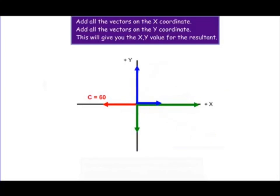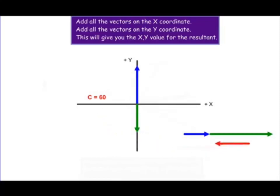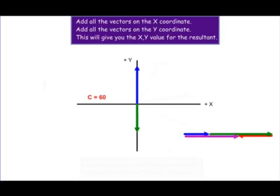We're going to find the sum of all the vectors in the x direction: the x component of vector a and the x component of vector b, placed head to tail. Vector c lies entirely on the x axis and is in the negative direction, so we have to subtract that. The sum of these three x vectors is just this distance and direction, indicated by the purple arrow.